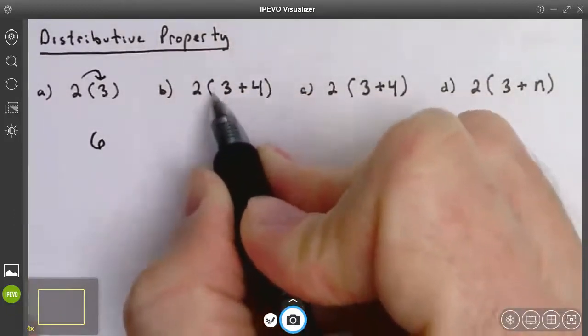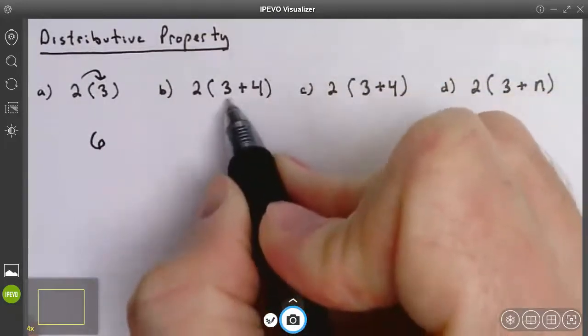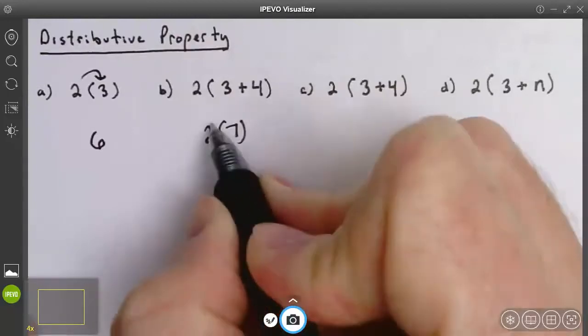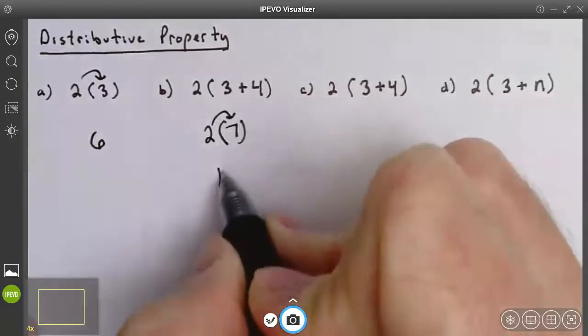Here we have a grouping symbol. Order of operations tell us that we should do what's inside the grouping first. 3 plus 4 is 7, bring down the 2, then distribute. 2 times 7 is 14.